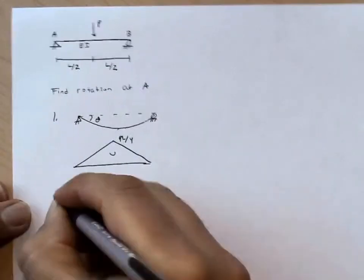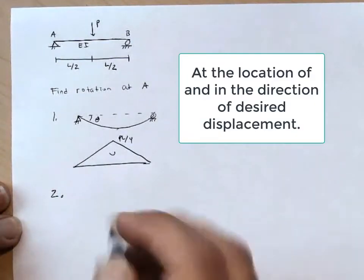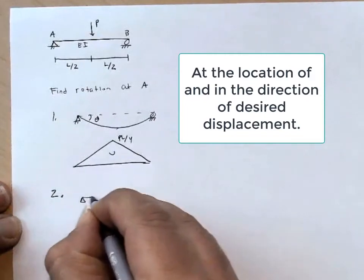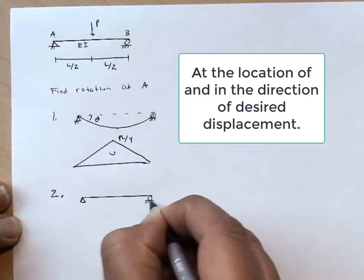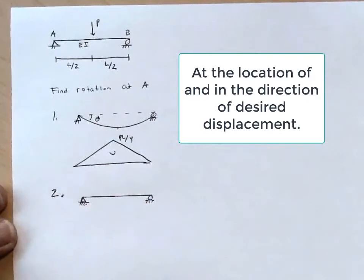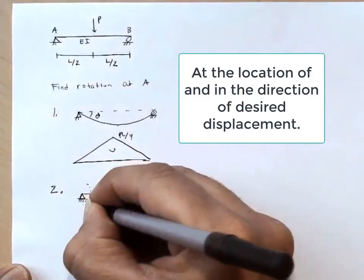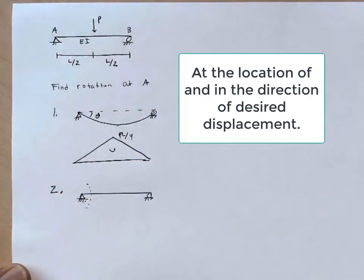Step two, apply the virtual load. Recall that we apply our virtual load at the location of and in the direction of desired displacement. Well, the desired displacement in this context—displacement is a general term that can also include rotation. The desired displacement is this rotation at the left end.